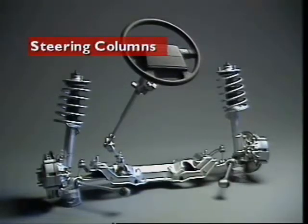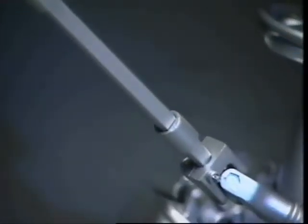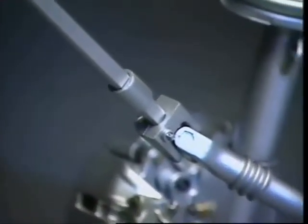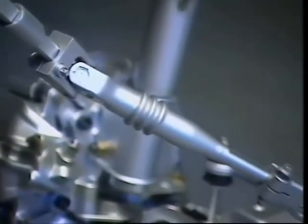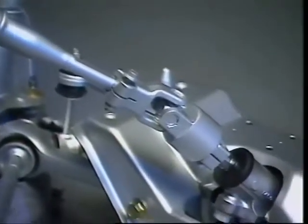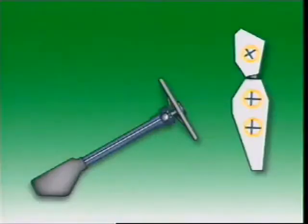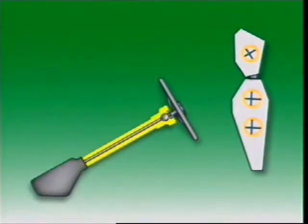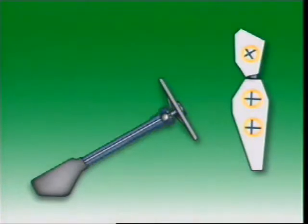This section examines steering columns. Effort applied to the steering wheel is transferred down the steering column, or shaft, to a steering box. In early cars, the steering column was a straight shaft running inside a hollow tube. The steering wheel was attached to one end, and the steering box to the other.